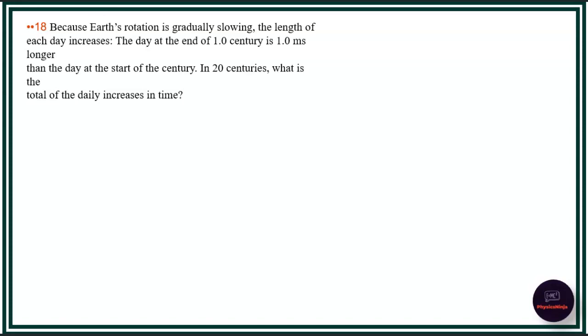Because Earth's rotation is gradually slowing, the length of each day increases. The day at the end of one century is one millisecond longer than the day at the start of the century. In 20 centuries, what is the total of daily increase in time?